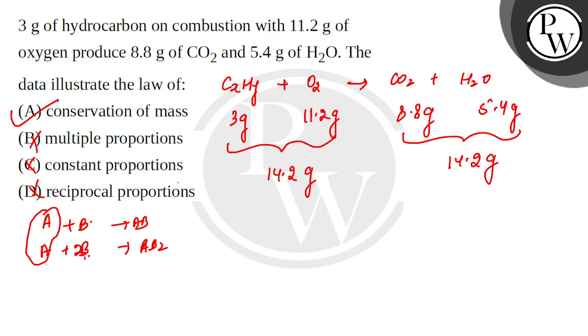Constant proportions means that any pure substance is made by constituent particles like water (H2O), NH3, CH4, or Cl2. The constituent particles like hydrogen and oxygen in H2O will be in a constant mass ratio regardless of the source.